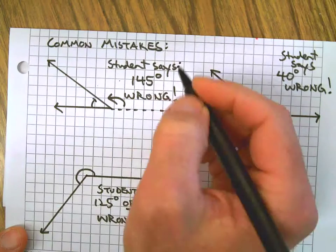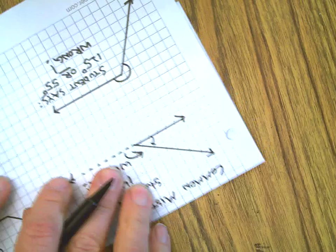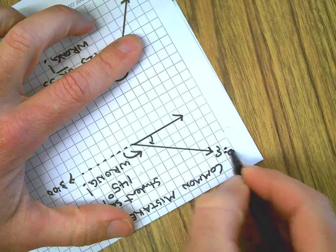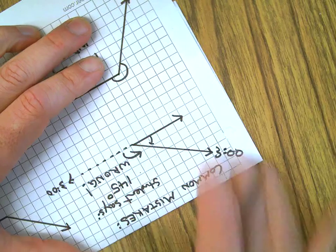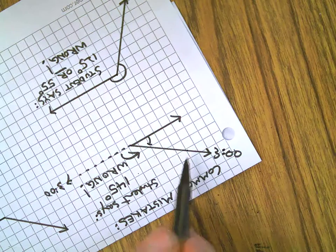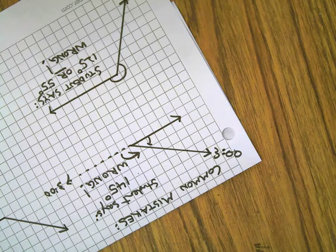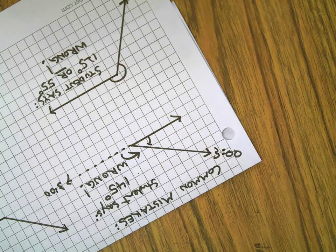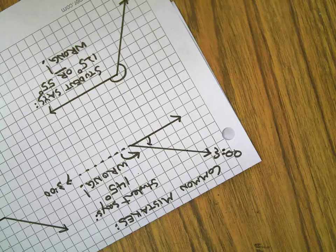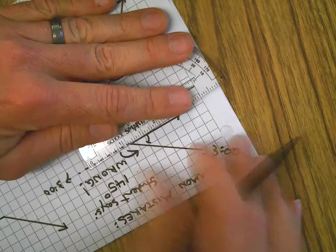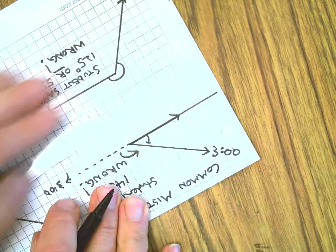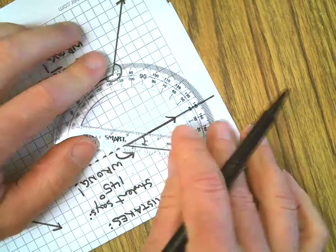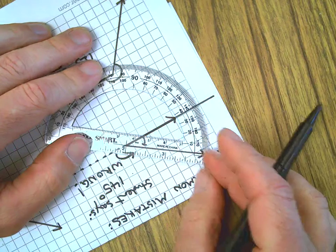They started over here - they started at three o'clock and went this way, but the problem is there's no line over here. Sometimes you're going to be given angles that are in a weird orientation, and you just got to say 'hey, this one opened this way.' What if we move it around and make this the three o'clock? You can do that - you can take a book and spin it around.